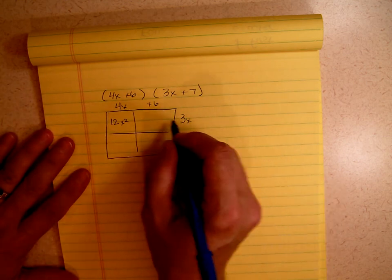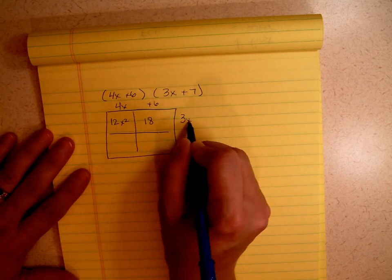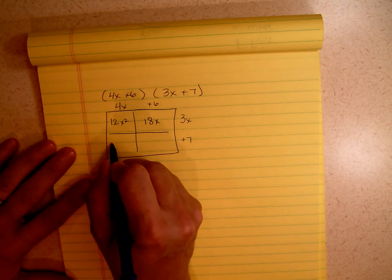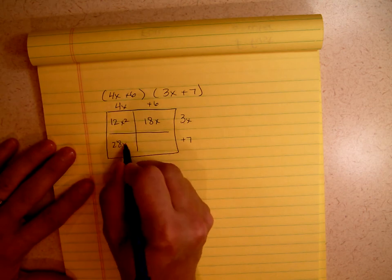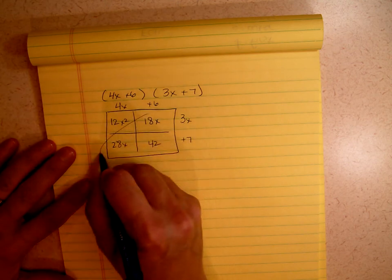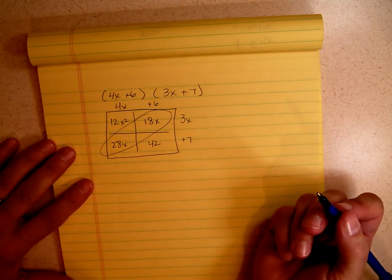3x times 6. 3 times 6 is 18, but there's only 1x right there. 7 times 4 is 28, and there's your x. And 7 times 6 is 42.